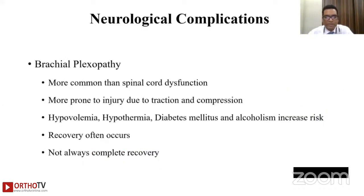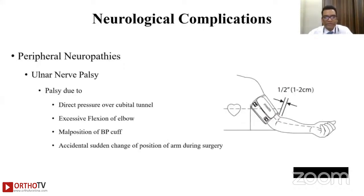Brachial plexopathy is more common than spinal cord dysfunction and is more prone to injury due to traction and compression. Main risk factors include hypovolemia, hypothermia, diabetes mellitus, and alcoholism — recovery often occurs but is not always complete. The most common peripheral nerve injury is ulnar nerve palsy, due to direct pressure at the cubital tunnel, excessive elbow flexion, or BP cuff positioning. Ensure the BP cuff is away from the elbow and guard against accidental sudden changes in arm position during surgery.